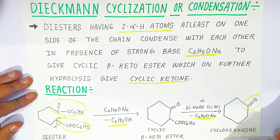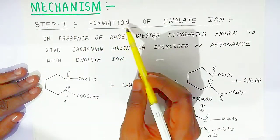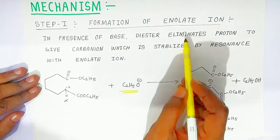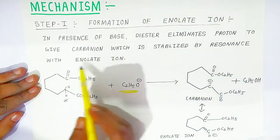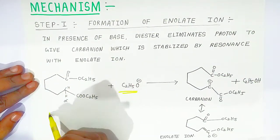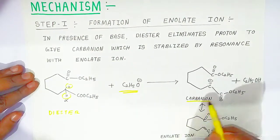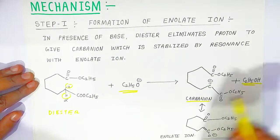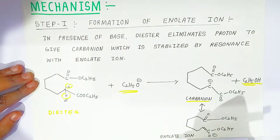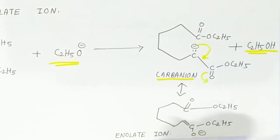Now for the mechanism of Dieckmann cyclization. In the first step, there is formation of an enolate ion or carbanion. In the presence of base, the diester eliminates a proton to give a carbanion, which is stabilized by resonance with the enolate ion. The diester has two hydrogen atoms, so there is elimination of a proton to form a carbanion. Resonance takes place and forms the enolate ion, with the electrons shifting to give a negative charge on oxygen.